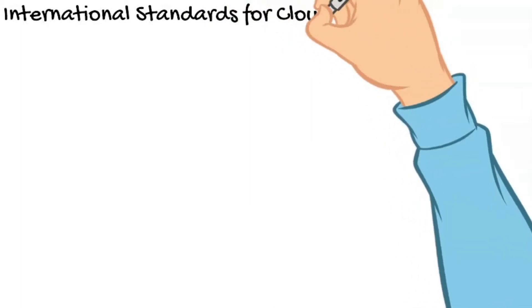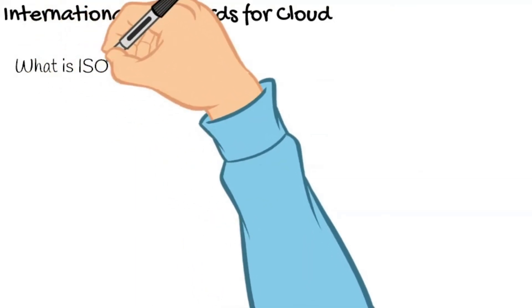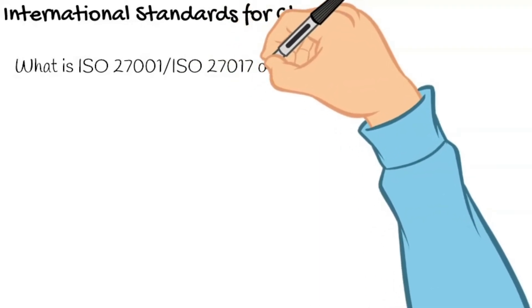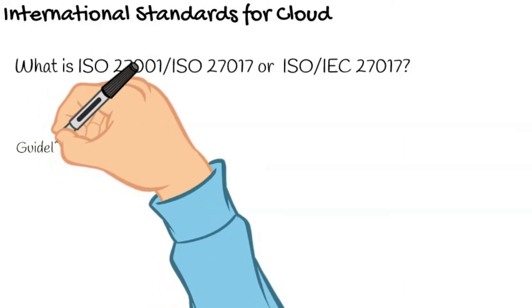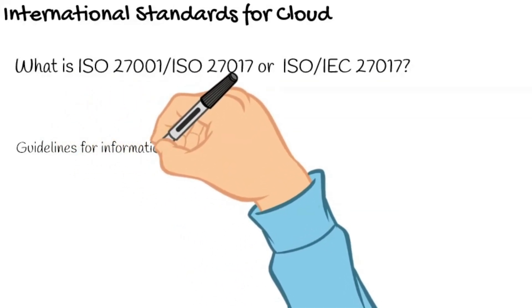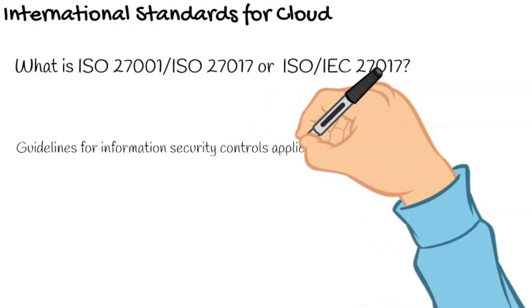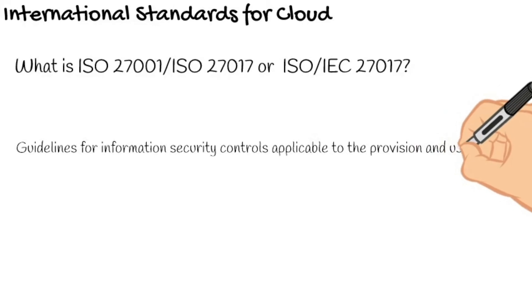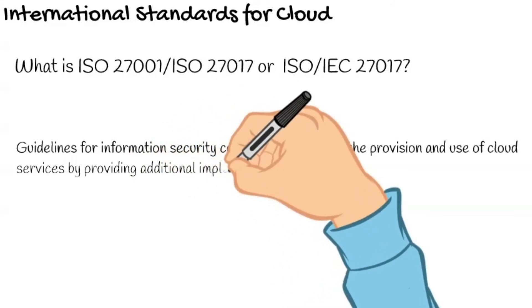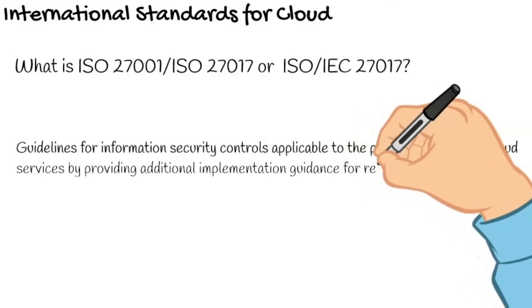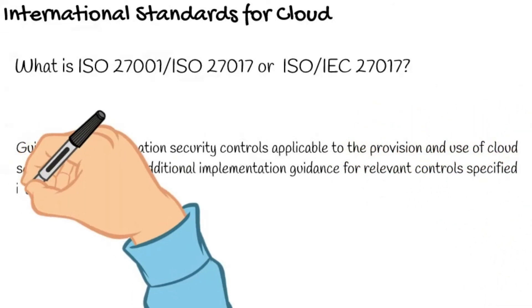ISO 27002 is a straightforward and effective approach to the strategy of information security management. Based on ISO/IEC 27002, ISO/IEC 27017:2015 gives guidelines for information security controls applicable to the provision and use of cloud services, by providing additional implementation guidance for relevant controls specified in ISO/IEC 27002.